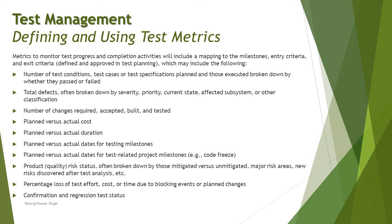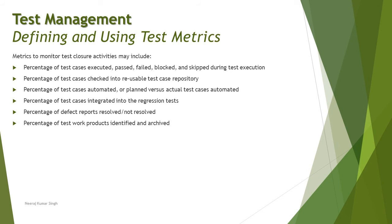Last but not least — metrics for test closure activities. These help check the effectiveness of test closure activities, also referred to as a retrospective. Metrics to monitor test closure may include: percentage of test cases executed (pass, fail, blocked, and skipped) during execution, as captured in the test summary report; percentage of test cases checked into a reusable test case repository for future use; and percentage of test cases automated, or planned versus actual test cases automated.